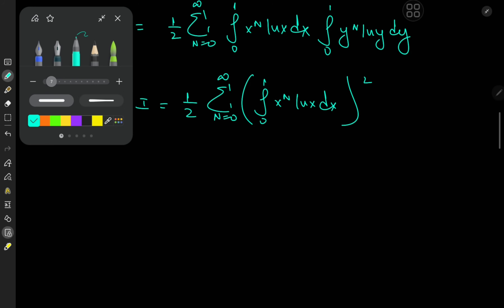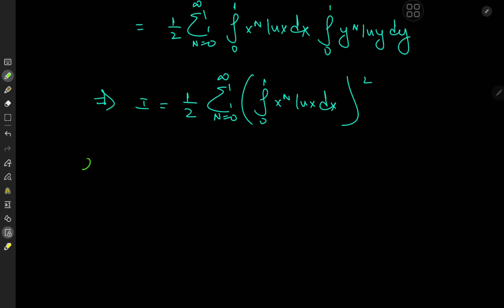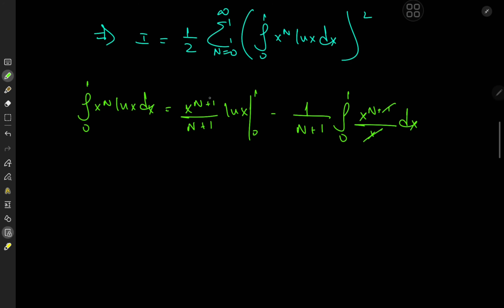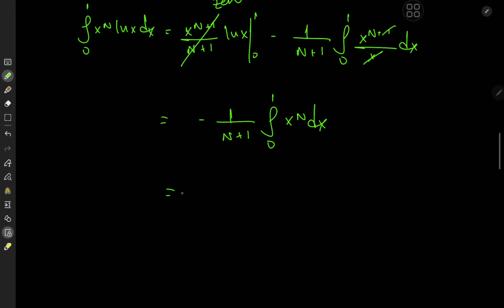Evaluating this integral is actually pretty simple — all we need is integration by parts. We have the integral from 0 to 1 of x to the n log x dx equals x to the (n+1) over (n+1) times log x, evaluated from 0 to 1, minus 1 over (n+1) times the integral from 0 to 1 of x to the n dx. The first term converges to 0 at both limits, trivially shown using L'Hôpital's rule. So we have negative 1 over (n+1) times the integral from 0 to 1 of x to the n dx, which gives negative 1 over (n+1) squared.